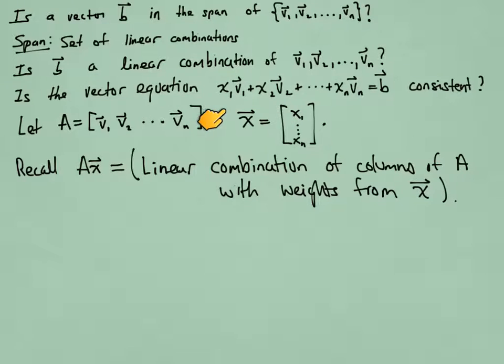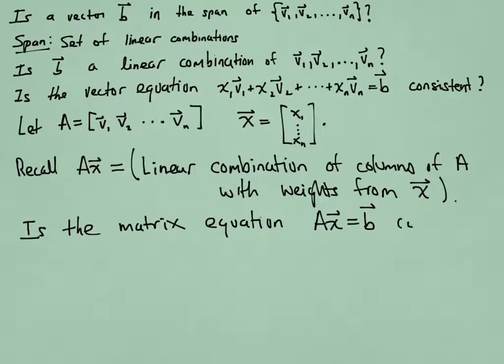The columns of A with the weights coming from that vector x. So now our question is rephrased. Is the matrix equation Ax = b consistent? Is there a vector x that makes this matrix equation consistent?